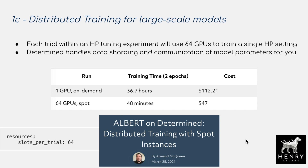Coming back to distributed training for large-scale models: in Keras, it's really just one line of code to do TF.distribute.MirrorStrategy; PyTorch has similar syntax. Determined is also implementing this for you. All you need to do to hand off Determined's distributed training is implement one line in the configuration file: 'resources: slots_per_trial: 64' — and that will use 64 GPUs to train a single hyperparameter setting. Determined automatically handles data sharding and communication of model parameters.